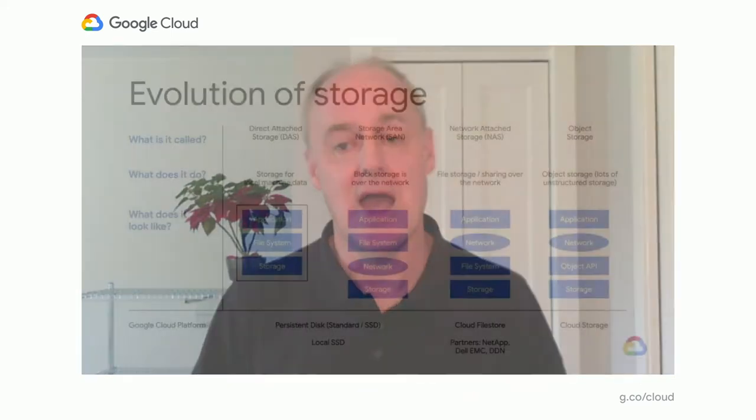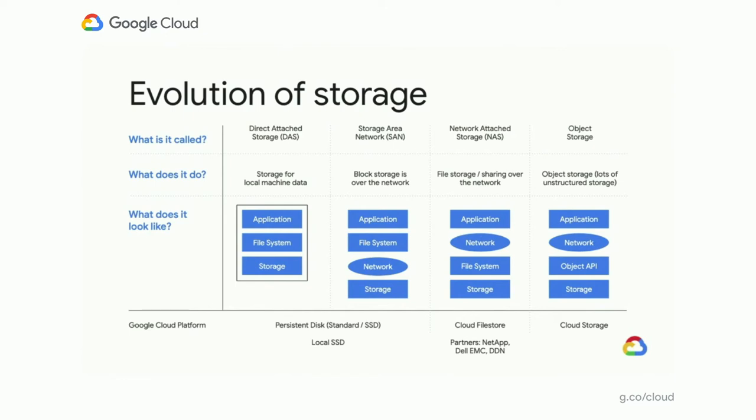For network-attached storage or a file share — where I want a file share shared in a department or across an enterprise — from Google Cloud we have Google Cloud Filestore as our first-party product. We also work closely with partners such as NetApp, Dell EMC, particularly their Isilon product, and DDN. These are enterprise vendors who've been working in file storage for many years, and we want to help carry those customers forward as they look to use those products in the cloud. For object storage in Google Cloud, the product we have is called Cloud Storage, our object storage product for storing data at really large scale.